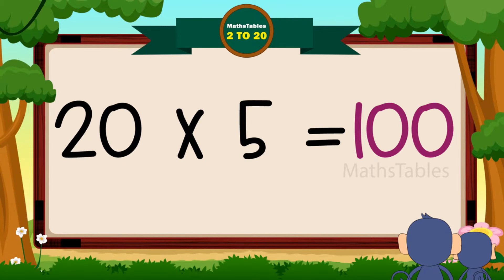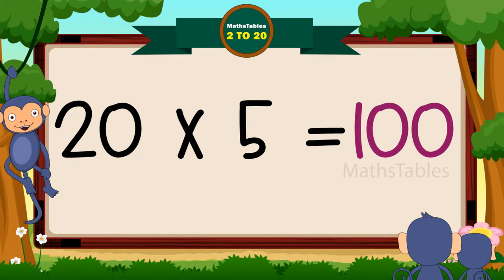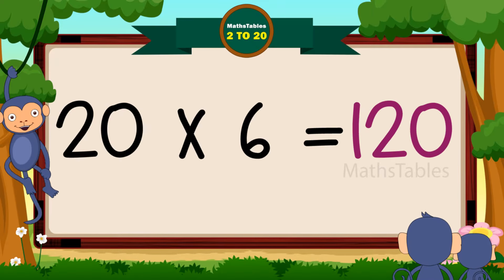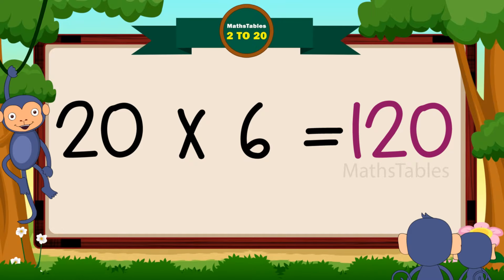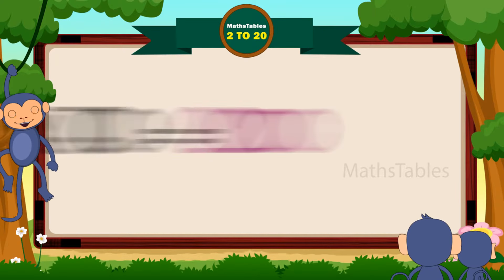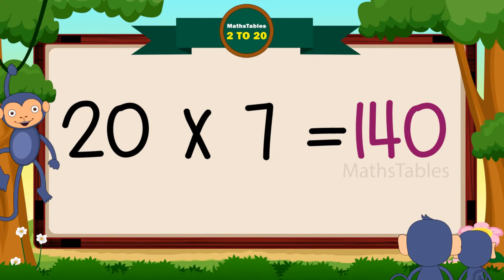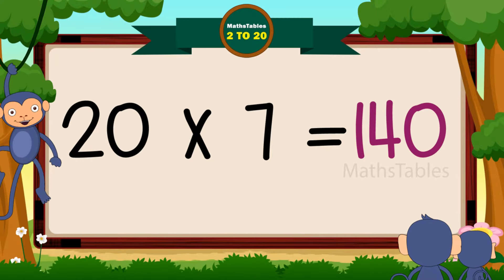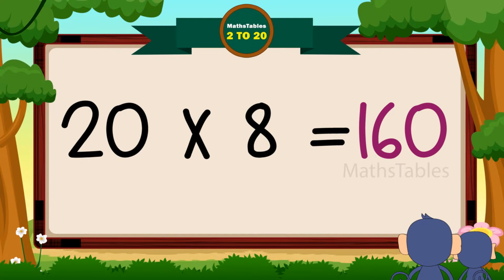2 5's are 100, 2 5's are 100. 2 6's are 120, 2 6's are 120. 2 7's are 140, 2 7's are 140. 2 8's are 160.